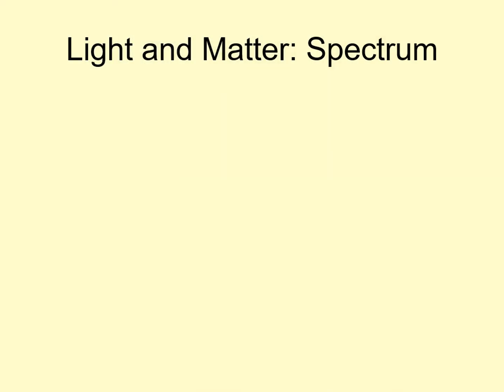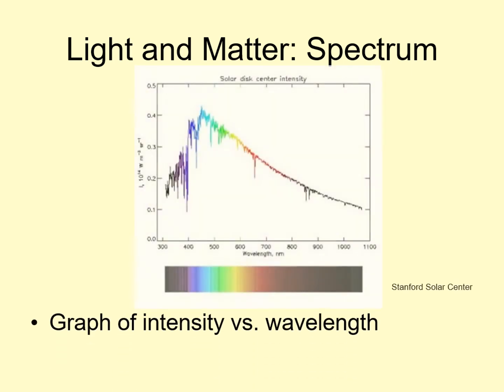Now we need to focus more on how light and matter interact with each other. I want to start by saying a little bit about this term spectrum I've mentioned. A spectrum is effectively a graph. It shows light intensity on the vertical axis and wavelength on the horizontal axis.